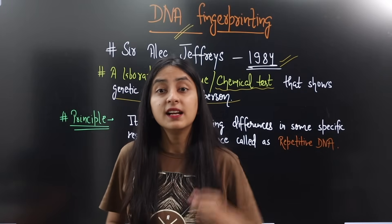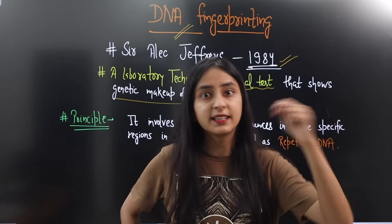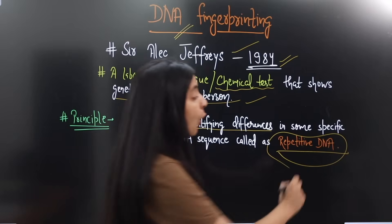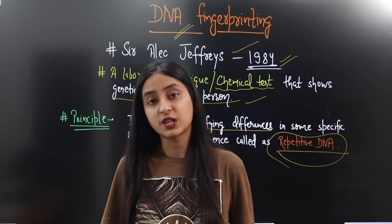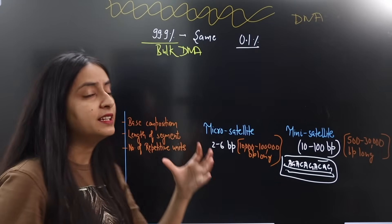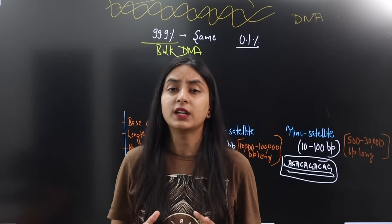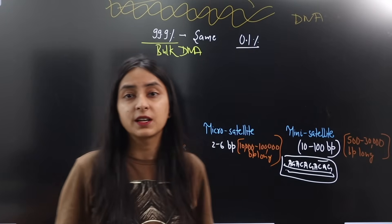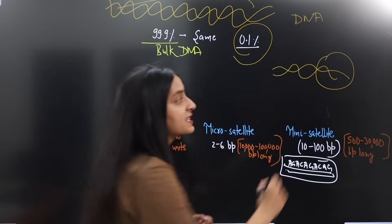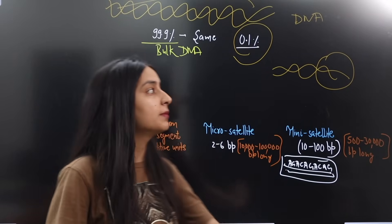Now, how are we using DNA Fingerprinting for the identity of a person — for example, to find out who was the murderer? All humans share 99.9% of the same DNA. Only 0.1% of DNA is different in every person, and this 0.1% part is what gives us our individual identity. In DNA Fingerprinting, we use this 0.1% part.